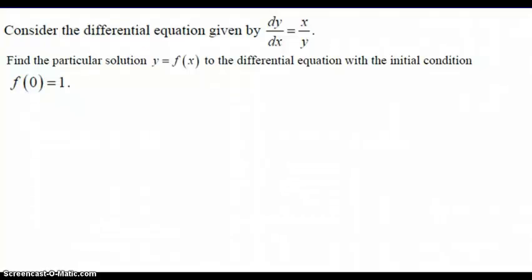We're almost finished with our first slope fields lesson. This is a continuation of where we were in the last video. Same differential equation, the slopes everywhere are the quotient of the x-coordinate over the y-coordinate. This is find the particular solution to the differential equation with the initial condition f of 0 equals 1.